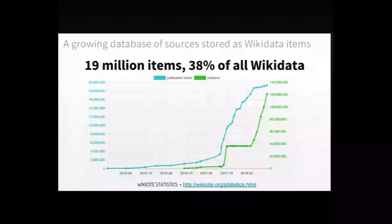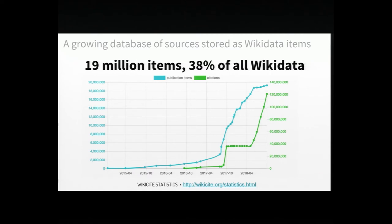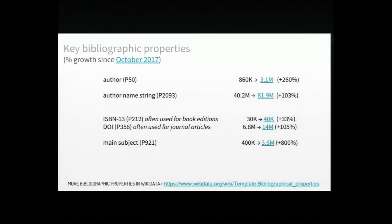To give you a sense of the state of the art of Wikisight: we currently have 90 million items that represent sources — that's about 38% of Wikidata. We've seen really important growth in key bibliographic properties. We currently have 3.1 million author statements; author strings represent strings that don't yet resolve to items. We have growing, still small but growing, coverage of book editions. We have 40 million DOIs. And the last property annotates the main topic of individual papers.